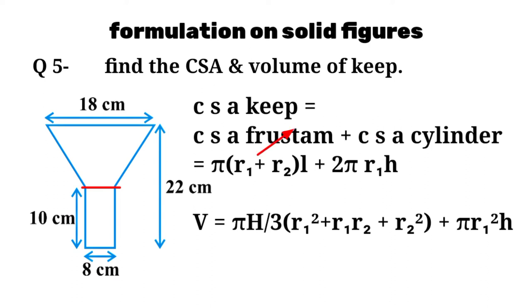CSA of frustum plus CSA of cylinder equals πrl plus 2πrh.